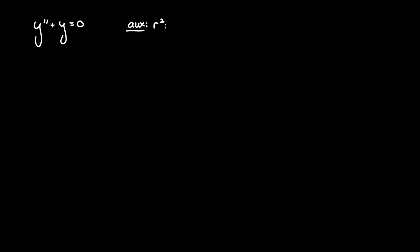So y double prime would be r squared, y with no prime would just be one, but if there were y with one prime then it would just be r. And we set that equal to zero.